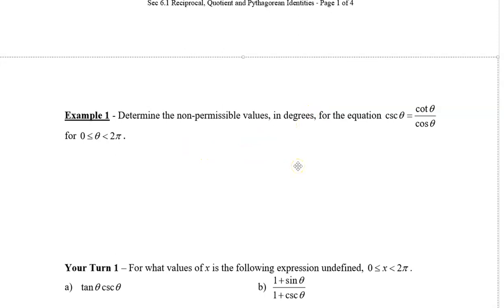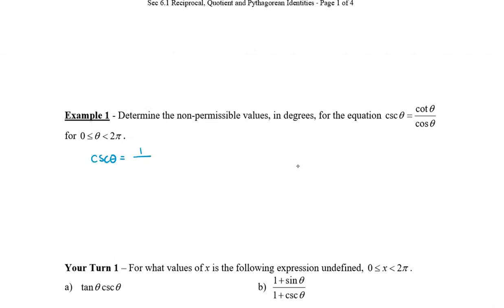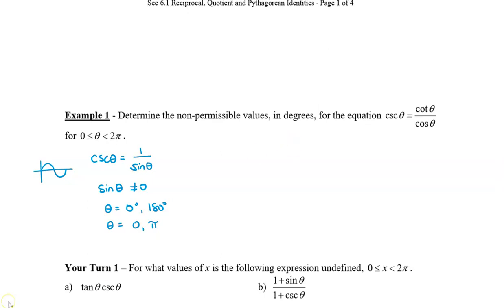On the left side, cosecant theta equals 1 divided by sine theta, so sine theta cannot equal 0. Looking at the graph of sine, that occurs at theta equals 0 degrees and 180 degrees — or 0 and pi in radians. Therefore, the non-permissible values from the left side are 0 or 180 degrees, or 0 and pi.